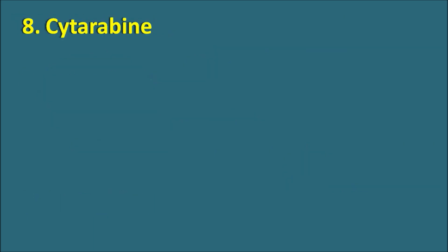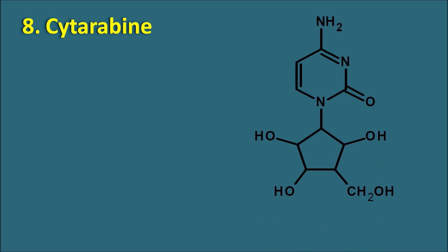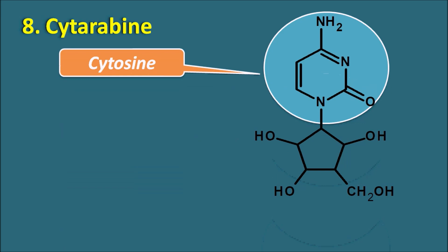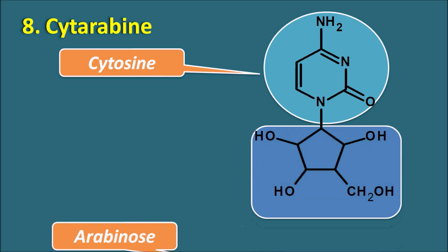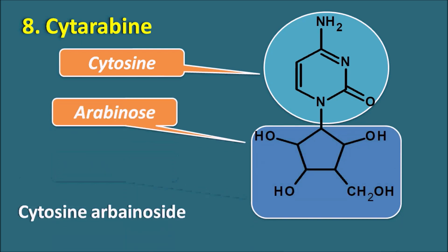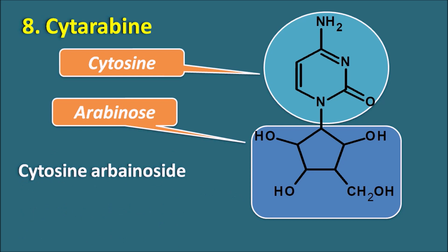The eighth one is cytarabine. Cytarabine is a simple antimetabolite. In its structure we can observe the nucleic acid base cytosine, which is a pyrimidine analog, attached with a sugar moiety — arabinose. Cytarabine is nothing but cytosine arabinoside. This cytosine arabinoside can also be called by another name ara-C. Cytarabine acts as an antimetabolite and is converted into cytarabine triphosphate, which then inhibits the DNA polymerase enzyme.